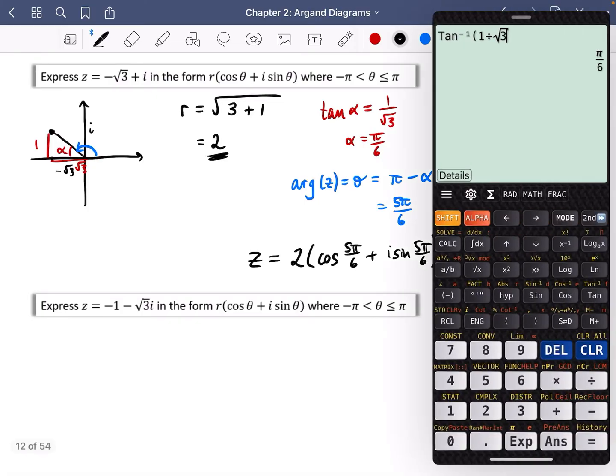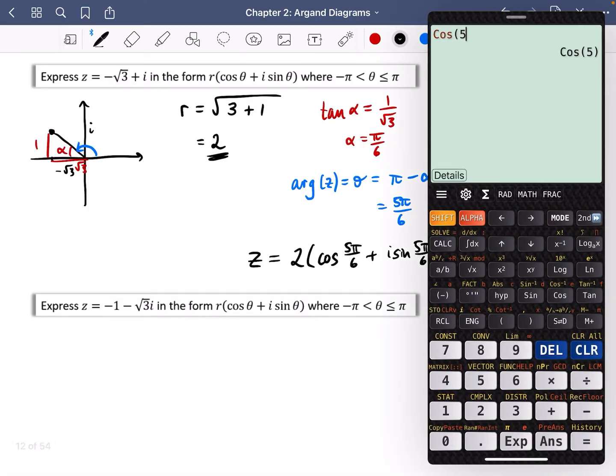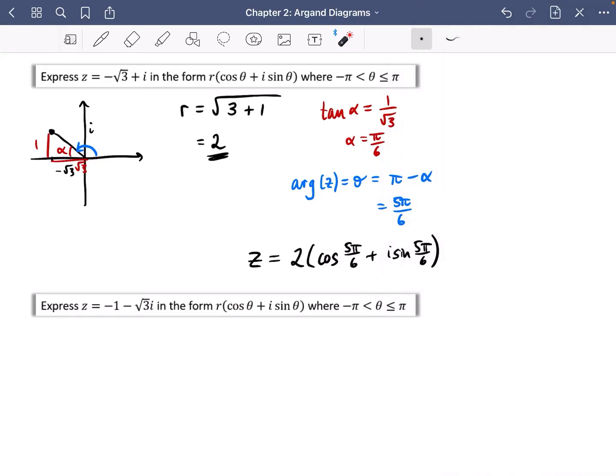I'm just going to quickly show you what happens. If you do the cos of five pi over six, you get minus root three over two. If you multiply that by two because of the r outside the front, you do get that the real part is minus root three. And similarly, you would get the same thing for the imaginary part. The imaginary part would come out as one.